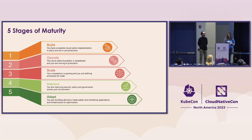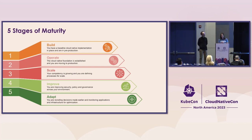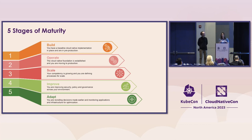There are five main levels. We have a baseline — you've already decided to go cloud-native before you even pick up the maturity model, so we're not starting from a point of should you do it or not. The five levels start at Build, where you have a baseline environment but you're not in production — you're trialing it out, lots of POCs, trying to decide if it's for you and your organization.